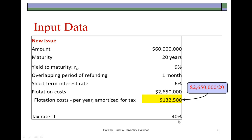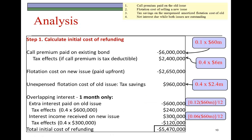In calculating the initial cost of refunding, there are four items: first, the call premium paid on the old issue when retired; second, the flotation cost of selling the new bond; third, the tax savings on the unexpensed flotation cost of the old issue; and fourth, the net interest due while both issues are outstanding. The call premium paid on the existing issue is $6 million — a cash outflow.